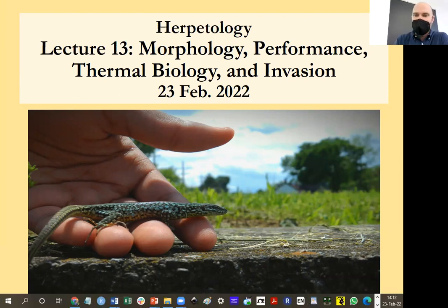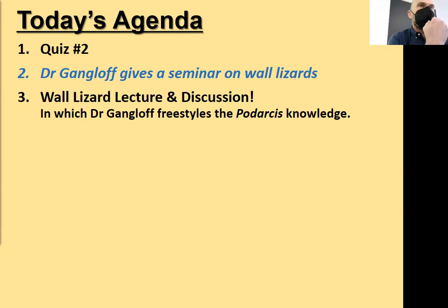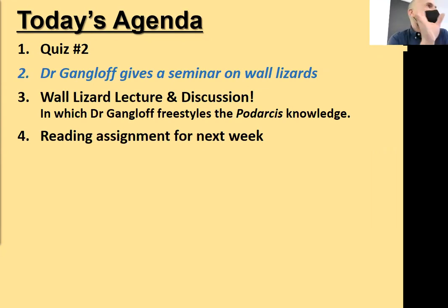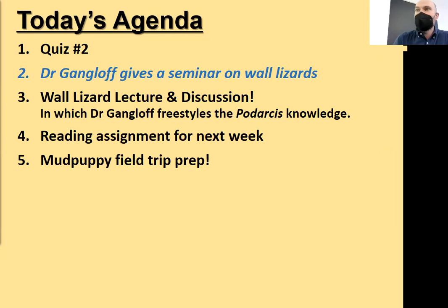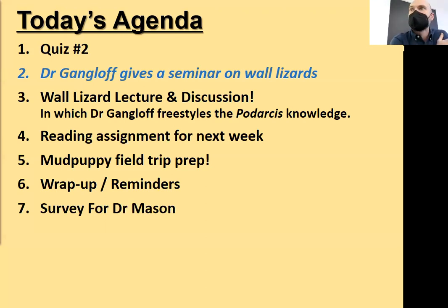So our agenda looks like this. Before we get into that, we are going to start off with quiz number two. And then I'm going to give a seminar on wall lizards — a little bit different than a normal class lecture. I'll explain what's going to happen when we get there. Then I'm going to freelance a little bit and talk about wall lizards and all the stuff that comes up in the seminar. Just a little bit different structure than a traditional lecture. I've got a couple papers for you to read for next week. We'll talk about our mud puppy trip on Monday. I hope all of you have filled out the survey so we can plan accordingly. And then just wrap up with some reminders. And finally, we'll take the end of class today for you to give some feedback to Dr. Mason on his unit on venom. So that is the plan for today.